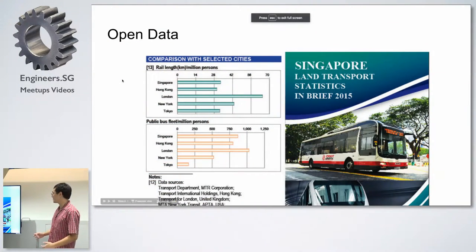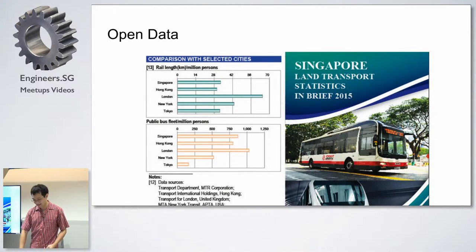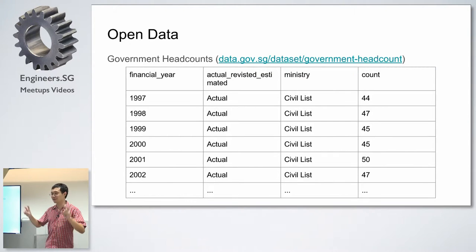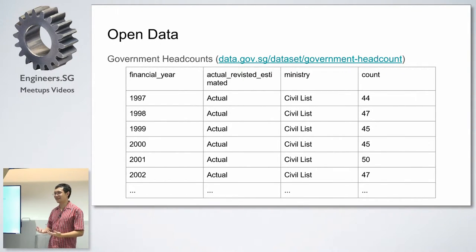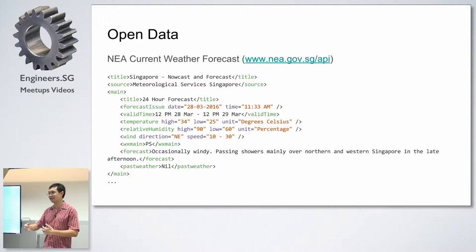Some of this open data isn't very interesting to programmers — it's the kind of spreadsheet or PowerPoint you put on a poster or show your boss, updated once a year. Similarly, small-scale data like an Excel spreadsheet of year-by-year ministry headcounts is kind of cool but there's not much you can do with it. Things like the NEA weather forecasts are more relevant because they're real-time — you can actually build an application on top of them, make a weather app or website.